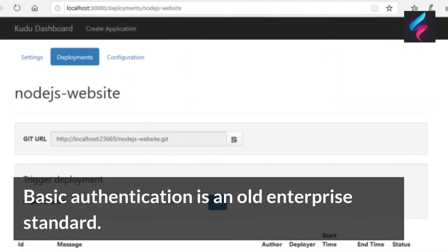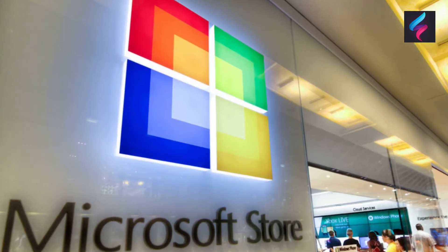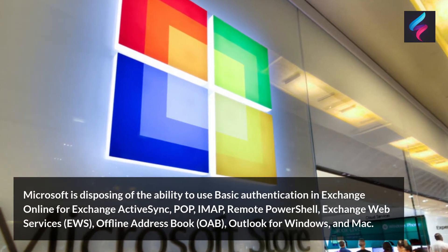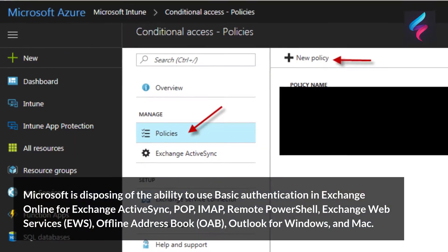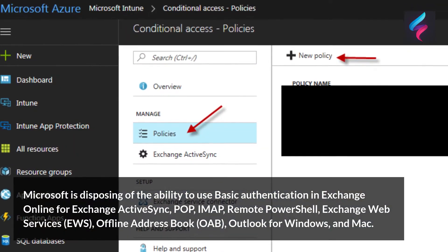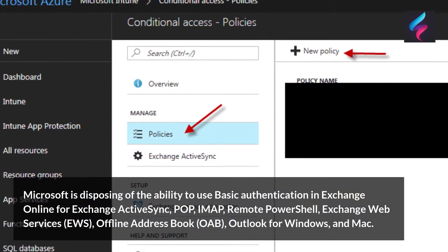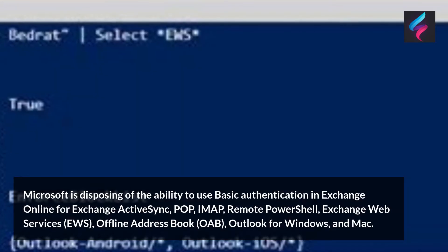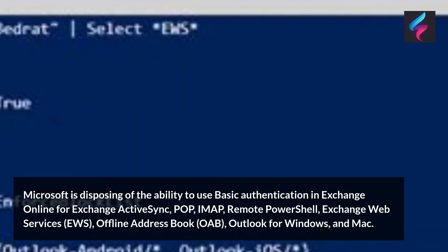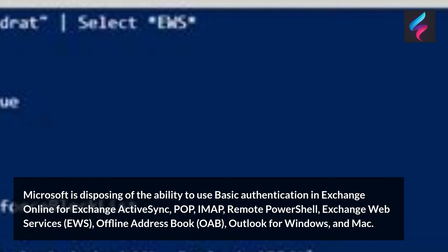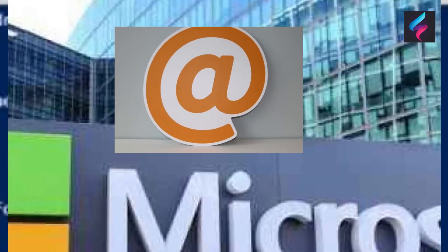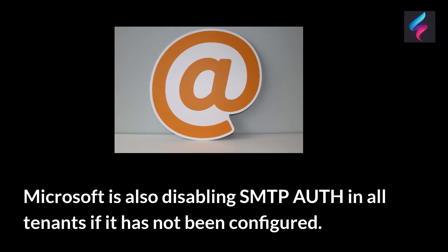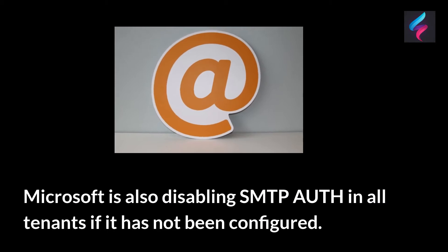Basic Authentication is an old enterprise standard. Microsoft is disposing of the ability to use Basic Authentication in Exchange Online for Exchange ActiveSync, POP, IMAP, Remote PowerShell, Exchange Web Services (EWS), Offline Address Book (OAB), Outlook for Windows, and Mac. Microsoft is also disabling SMTP Authentication for all tenants if it has not been configured.